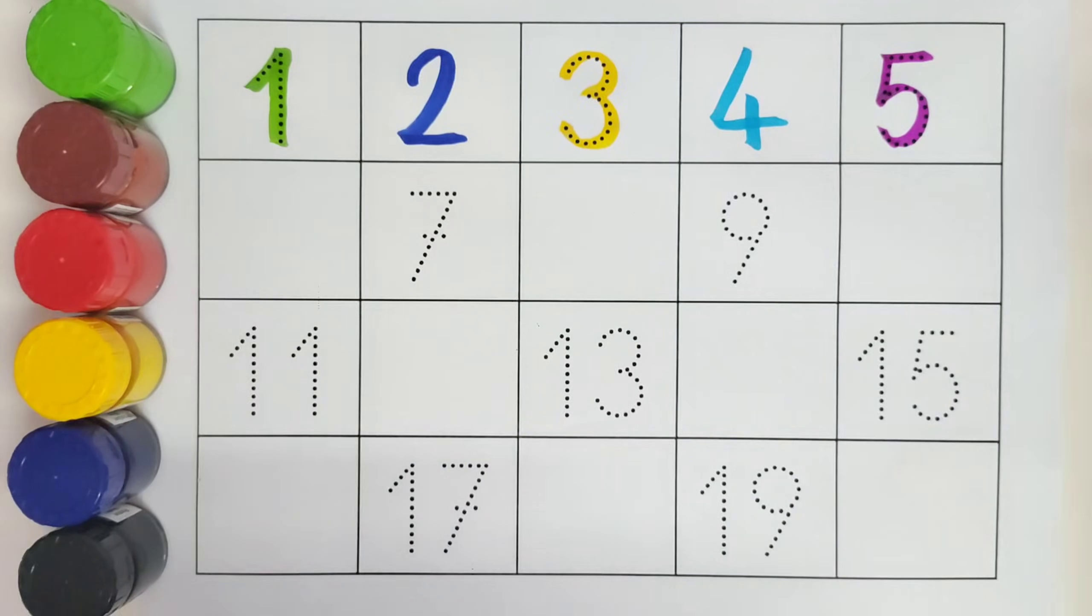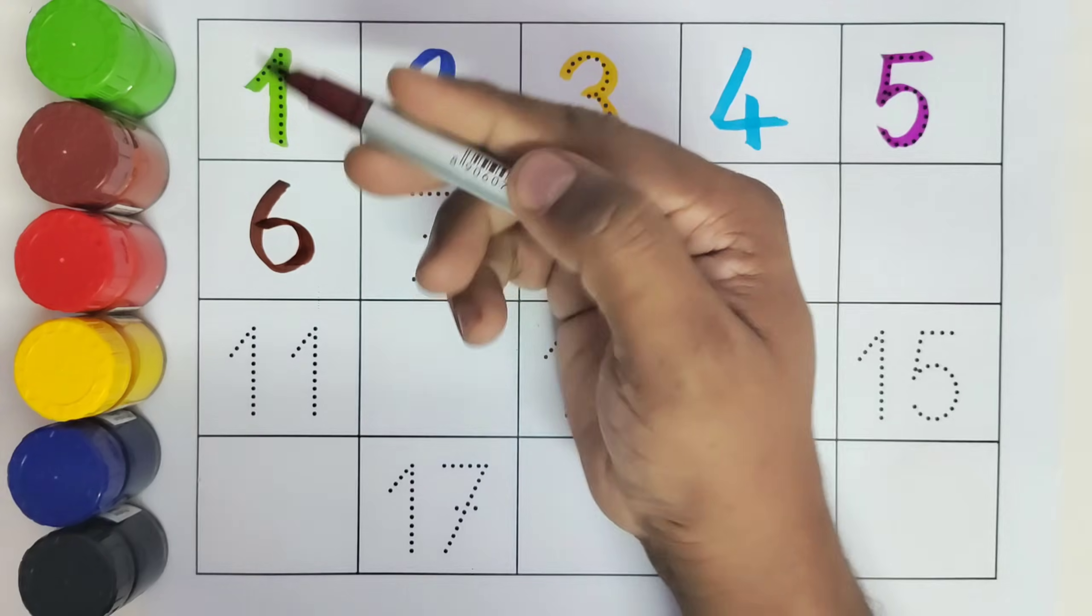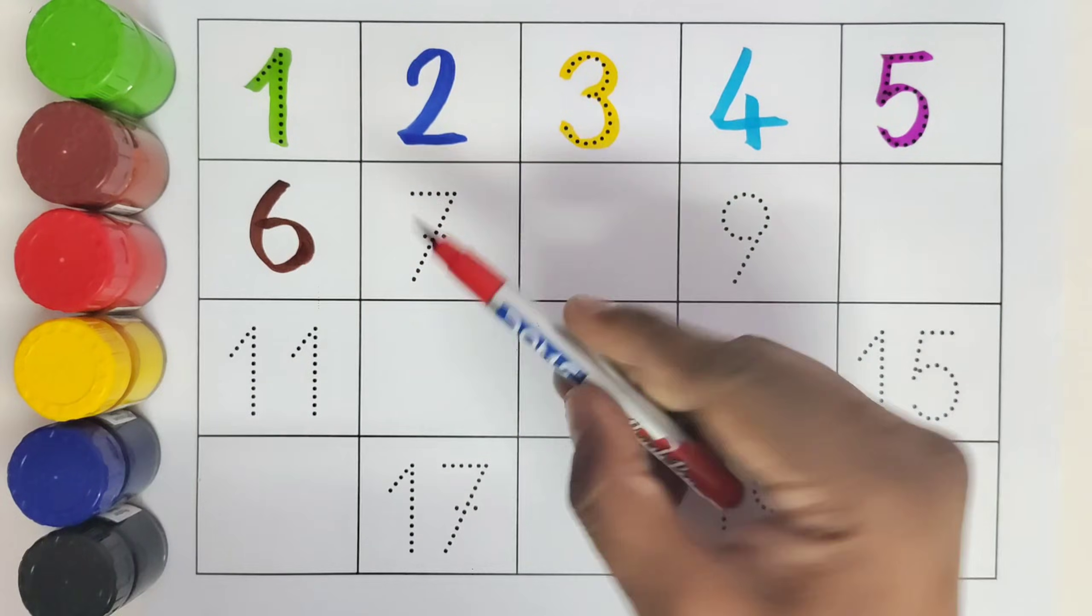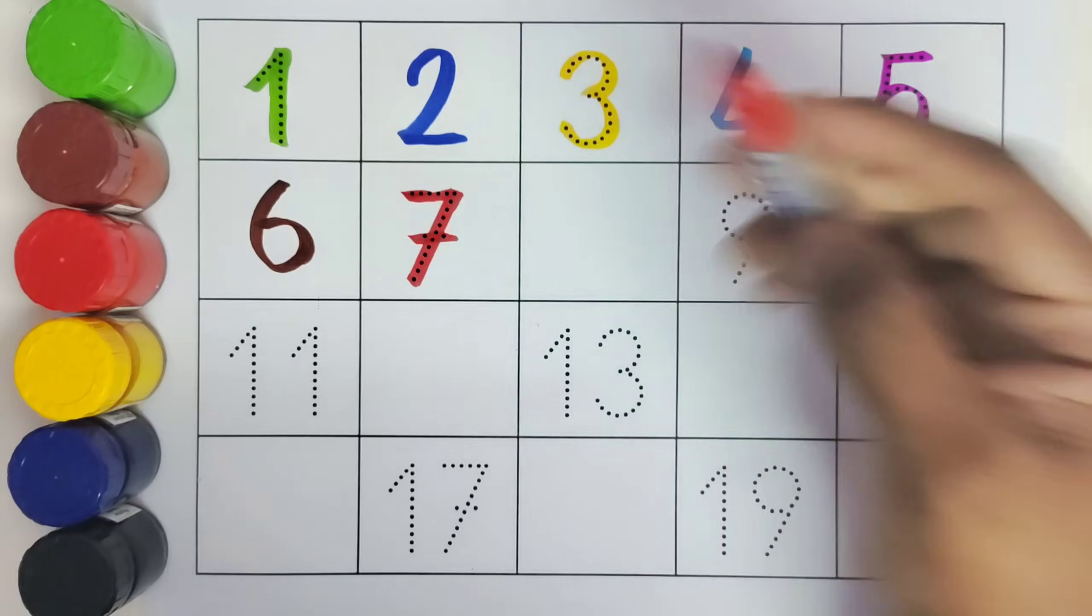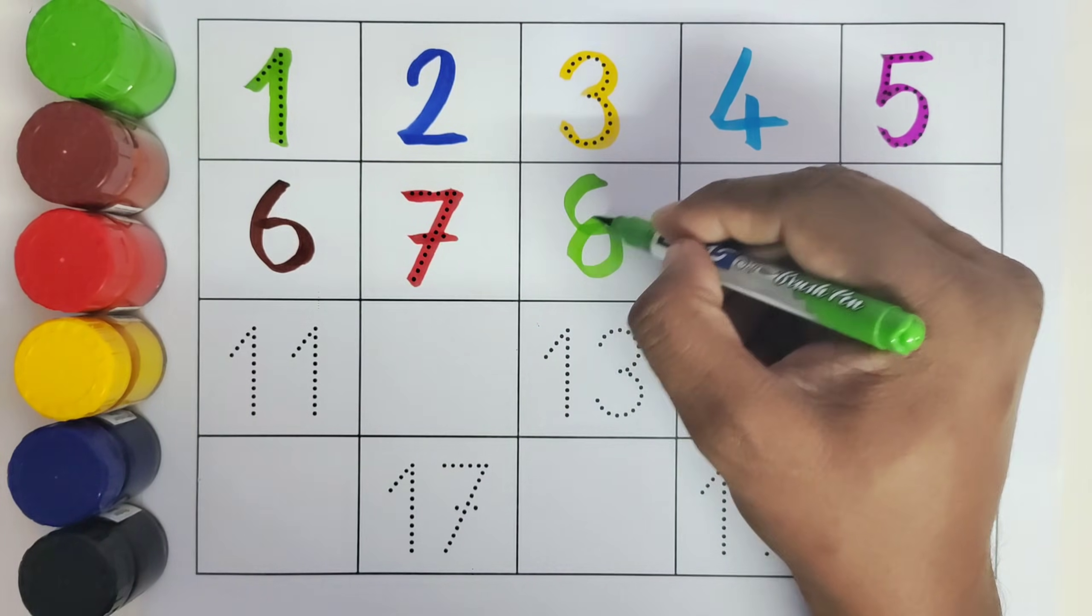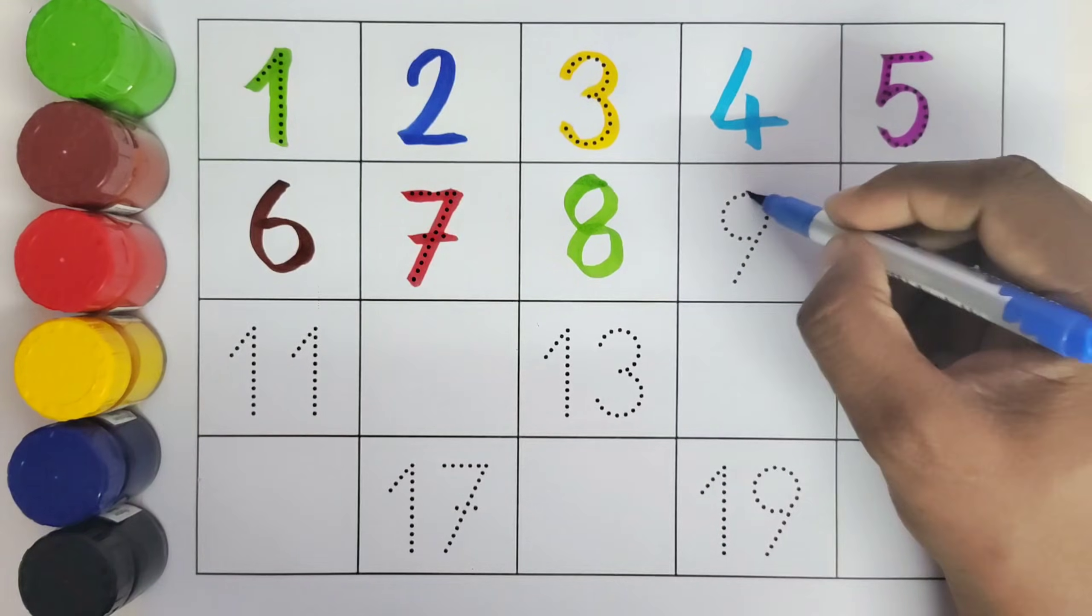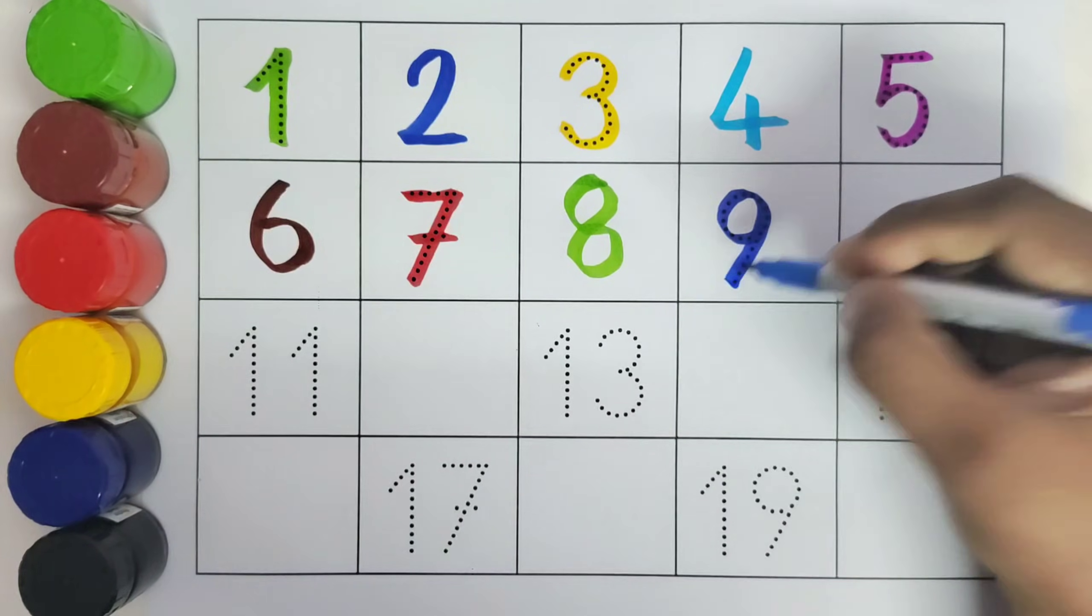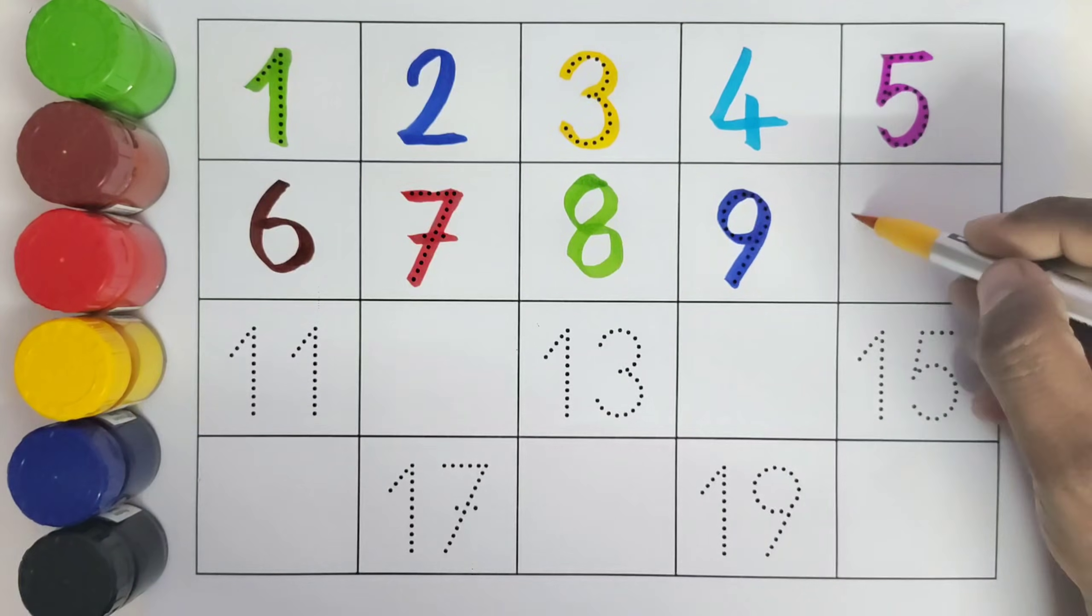What comes after number 5? 6. Number 6. This is 7. Number 7. What comes after number 7? 8. Number 8. This is 9. Number 9. What comes after 9? 10. Number 10.